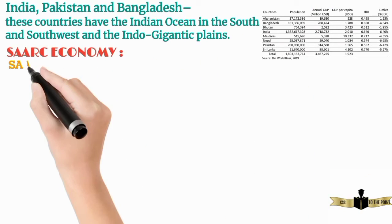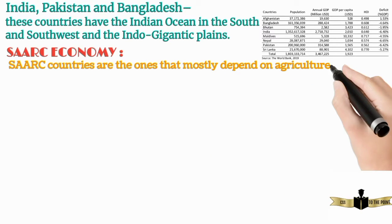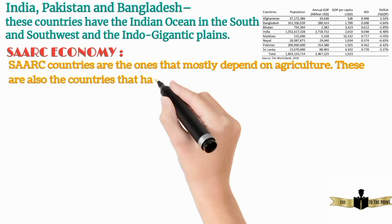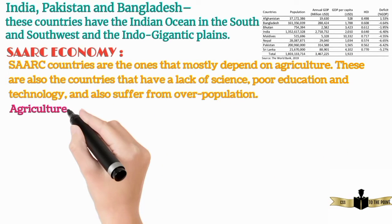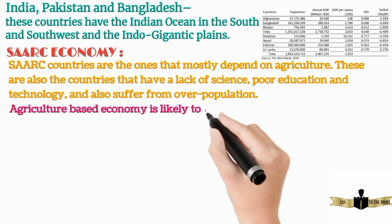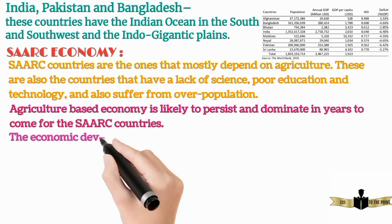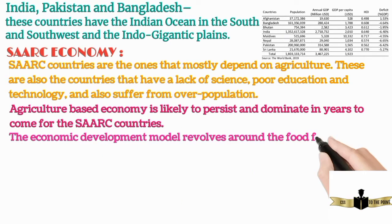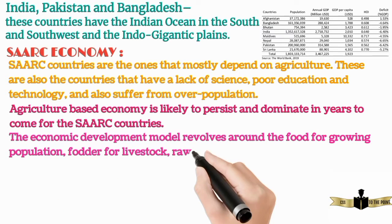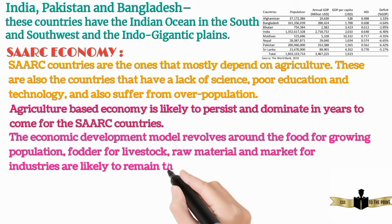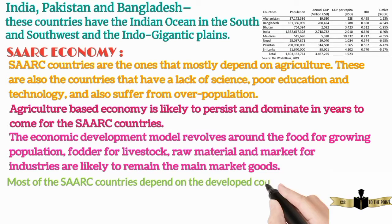SARK countries are ones that mostly depend on agriculture. These are also countries that have a lack of science, poor education and technology, and also suffer from overpopulation. An agriculture-based economy is likely to persist and dominate in years to come for the SARK countries. The economic development model revolves around food for a growing population, fodder for livestock, and raw materials and market for industries. Most of the SARK countries depend on the developed countries for aid in trade.